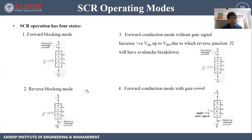The second operating mode is reverse blocking mode. Here we give negative or reverse supply between anode and cathode. The negative terminal connects to P of J1 and the positive terminal connects to N of J3, so J1 and J3 are reverse biased. For J2, N is connected to the negative terminal and P to the positive terminal, therefore J2 is forward biased and will allow current flow. However, J1 and J3 won't allow current flow, so the device remains in blocking mode — this is called reverse blocking mode.